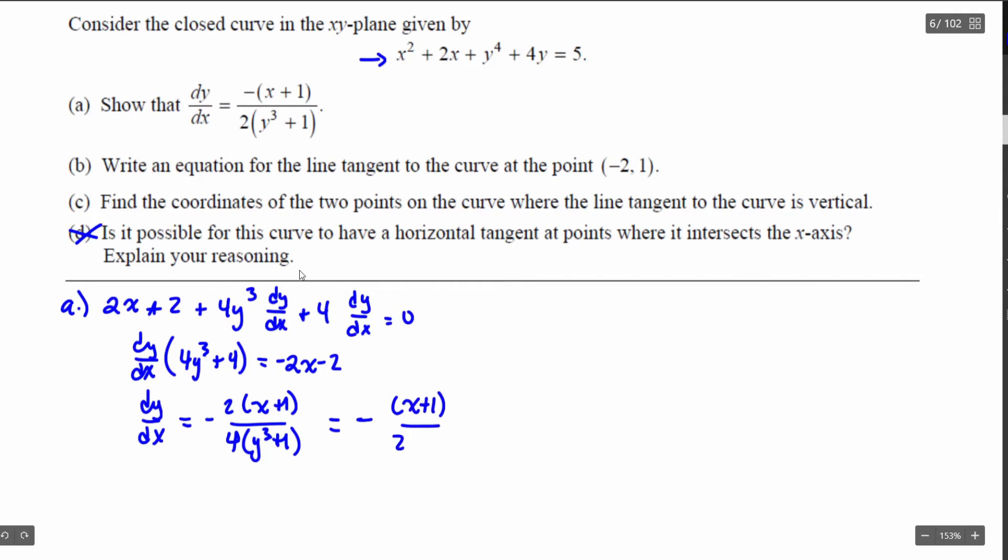That'll simplify to be negative x plus 1 in my numerator over the 2 and then the y cubed plus 1 in my denominator. That's exactly what I want to show and now that I have that value I've found that equation.